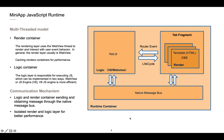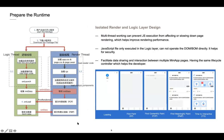The communication mechanism is based on native message passing, and the isolated render and layout design is for better performance. When the user clicks the MiniApp URI scheme to start the MiniApp, the runtime prepares and downloads the package file, then the logic thread and the render thread start working. The render thread loads render code like CSS and HTML files converted from the DSL language, and the logic layer loads libraries, plugins, and the JS files.